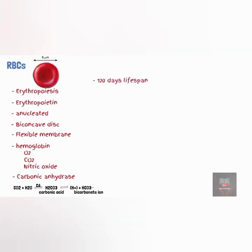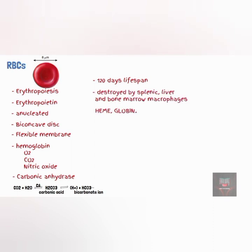The red blood cells have a lifespan of about 120 days. Ruptured red blood cells are removed from circulation and destroyed by macrophages in the spleen, liver, and bone marrow. The hemoglobin is broken down into heme and globin. The globin portion is further broken down into amino acids, which can be reused to synthesize proteins. The heme portion is further broken down into iron and biliverdin. The iron is transferred to the plasma by binding with transferrin, and stored by binding with ferritin in muscle fibers and liver cells.